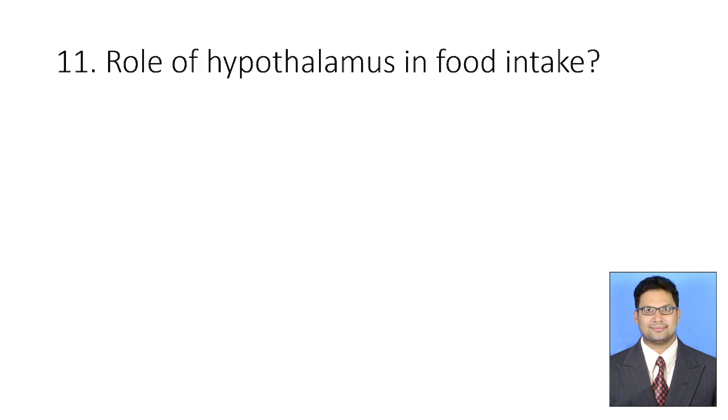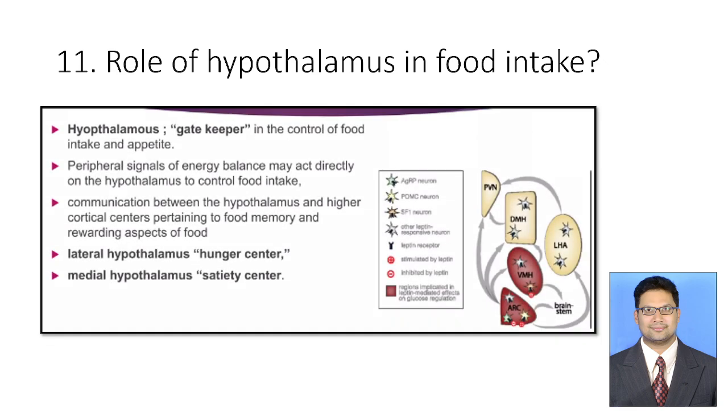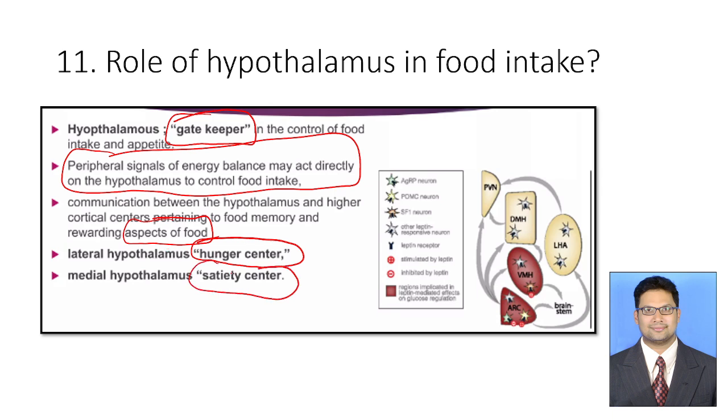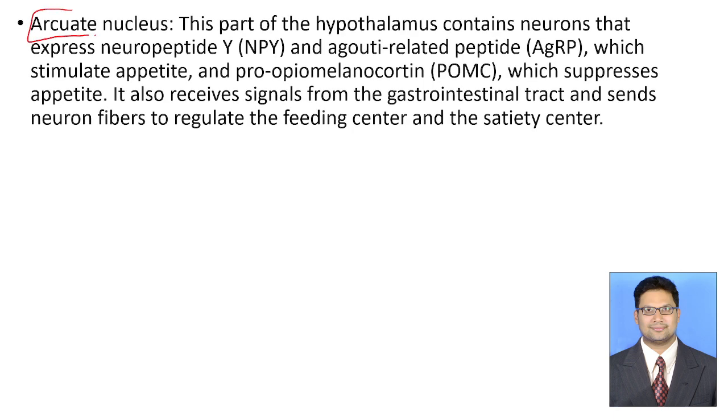Role of hypothalamus in food intake. Hypothalamus is a gatekeeper in the control of food intake and appetite. It receives the signal from periphery, especially GIT. There is also communication between hypothalamus, higher cortical center, pertaining to food memory and rewarding aspects of the food. Lateral hypothalamus is basically hunger center, medial hypothalamus basically satiety center. If you mention this, you will get 2 marks out of 3. We also need to mention arcuate nucleus that expresses neuropeptide Y and AGRP which stimulate the appetite, and POMC which suppresses appetite. If you write this, you will get 3 out of 3.